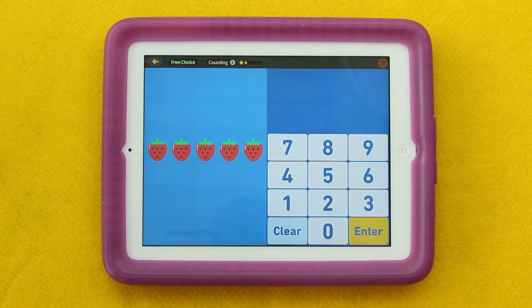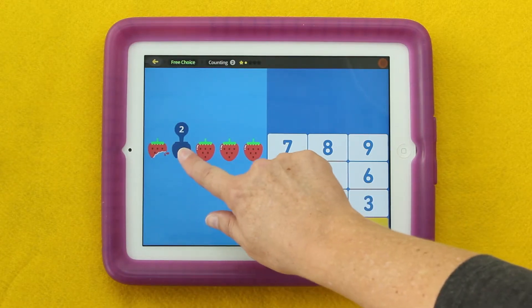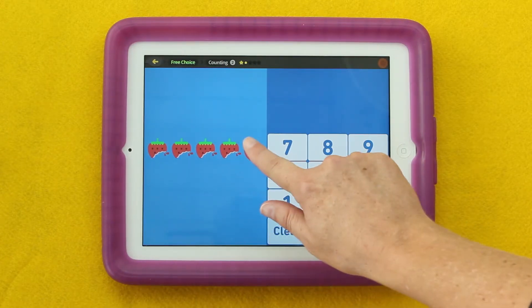At this point I would ask, let's all count together. I'm going to tap each strawberry and let's count each one. One, two, three, four, five.